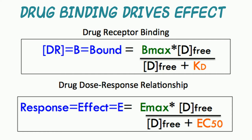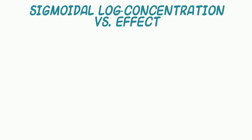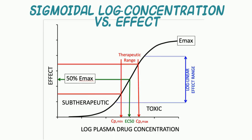When you compare the equations for this sigmoidal curve defining drug binding and compare it to the equations that define drug effect, you can see that the equations are very similar. That is, maximal binding and Bmax are now replaced by a maximal effect, or Emax, and the dissociation equilibrium constant KD is replaced by the effect concentration 50, or EC50. This brings us to another sigmoidal plot — the log concentration or log dose versus effect curve, which we discussed before in the context of justifying the value of measuring drug concentrations during therapeutic drug monitoring.